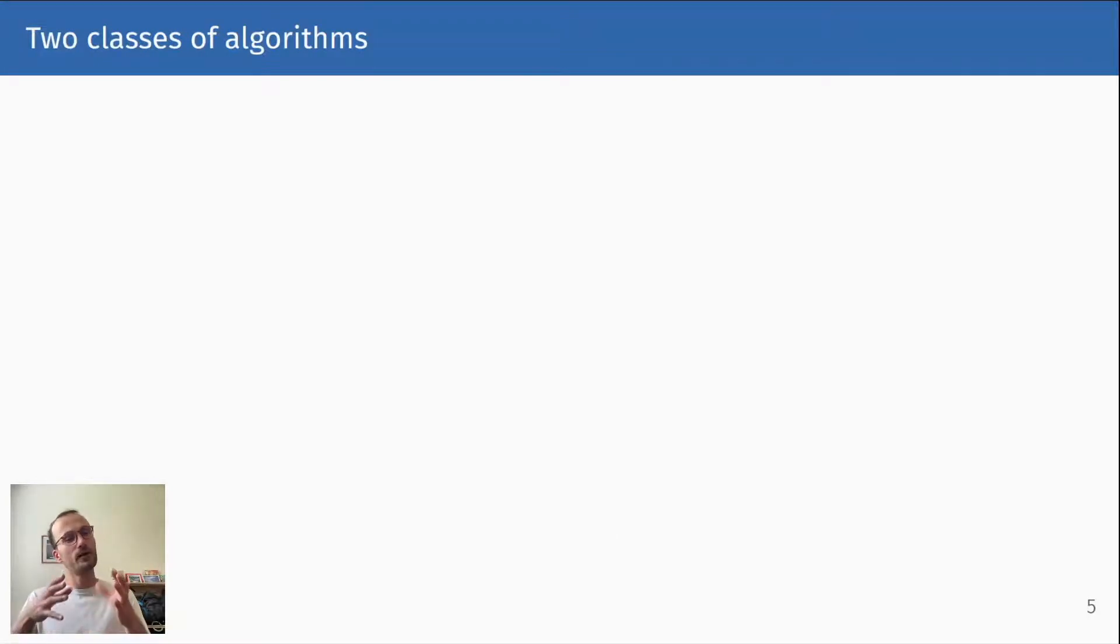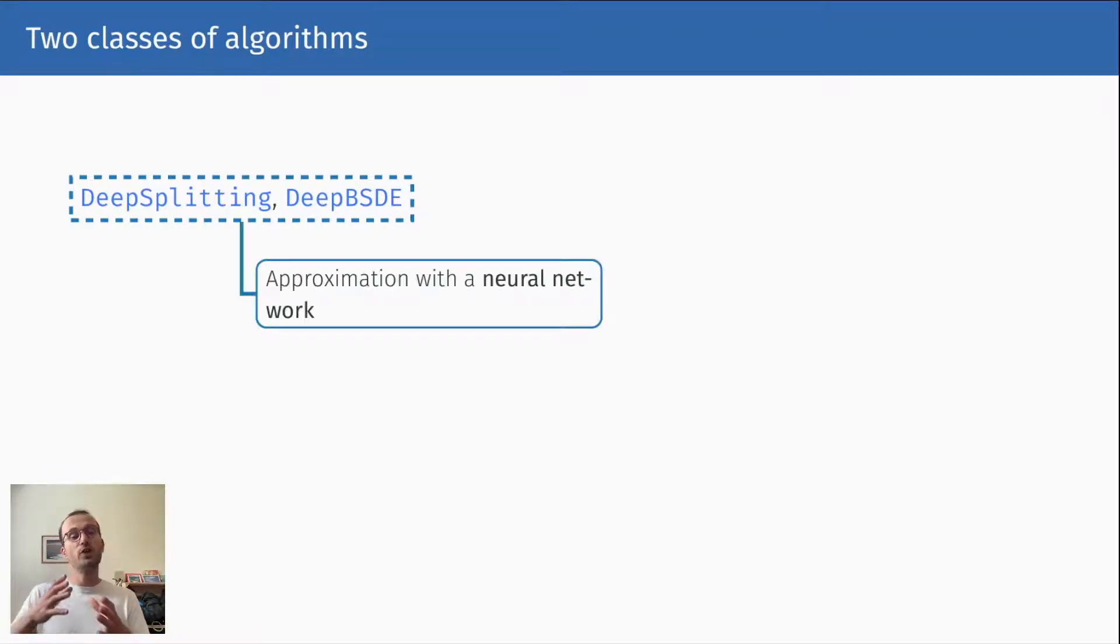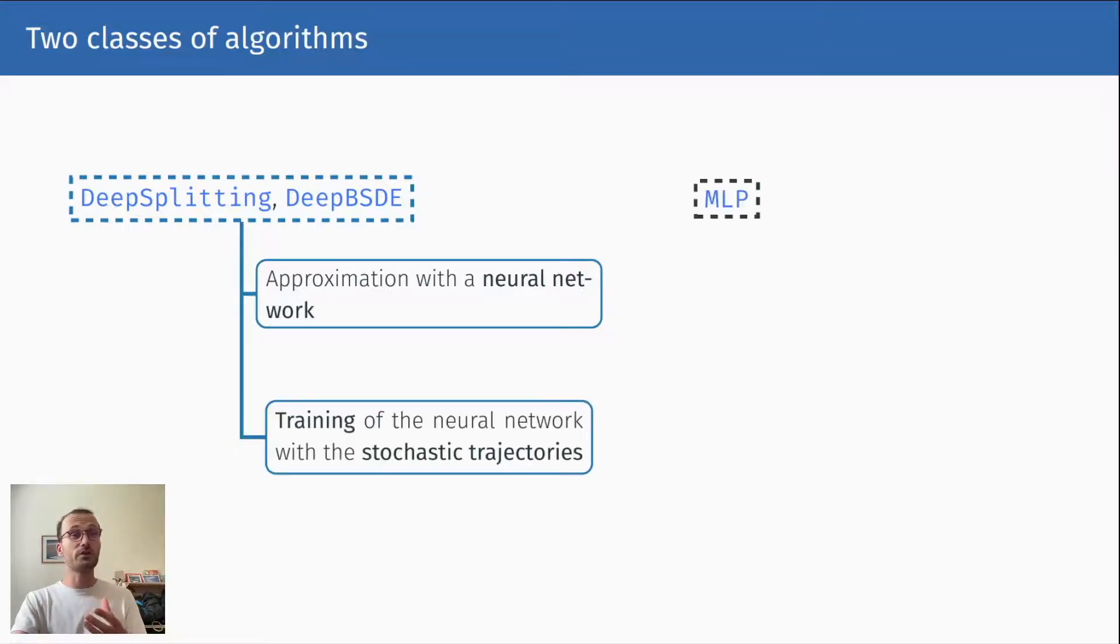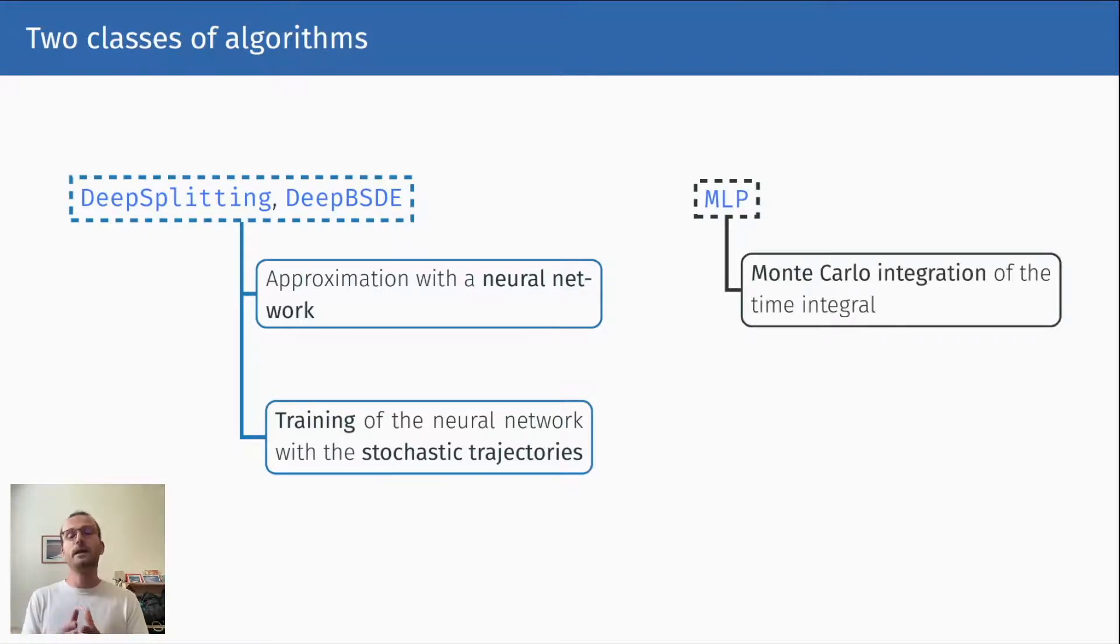The algorithms in HighDimPDE.jl can be split into two different classes. The first class corresponds to deep learning approximations, which essentially use a neural network to approximate the solution. This neural network is trained with the stochastic trajectories I've mentioned. The MLP scheme, which belongs to the second class of algorithms, is a much more traditional scheme based on fixed-point iteration and Monte Carlo integration.